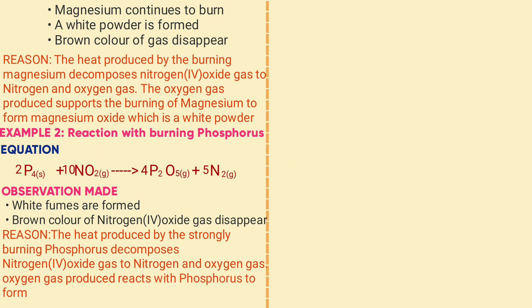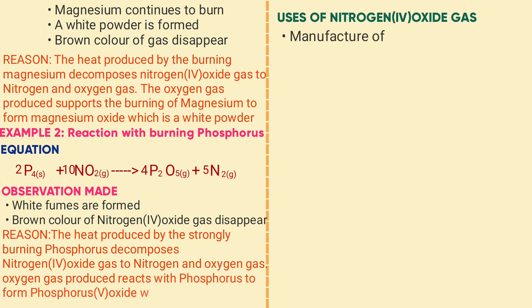Uses of nitrogen dioxide: manufacture of nitric acid, and as an intermediary in the manufacture of explosives, nylon, and plastics.